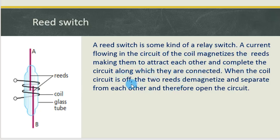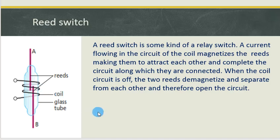When the coil circuit is off — meaning no current is flowing through the coil — the two reeds demagnetize and separate from each other, therefore opening the circuit. The reeds must not be made from steel because steel can become permanently magnetized, and even when you switch off the coil circuit, the two reeds may still remain in contact. But if made from iron, which is easy to demagnetize, the moment you switch off the coil circuit, the two reeds will separate from each other immediately and the circuit will be off.